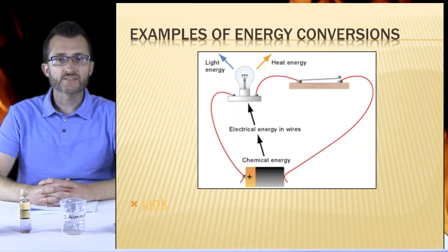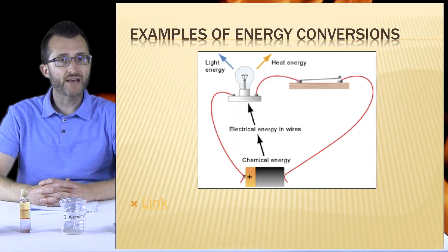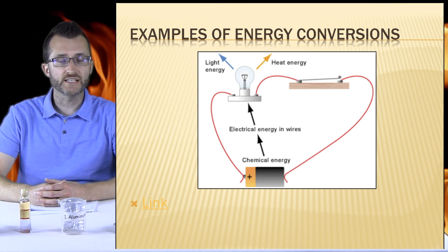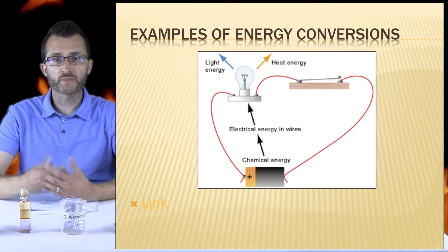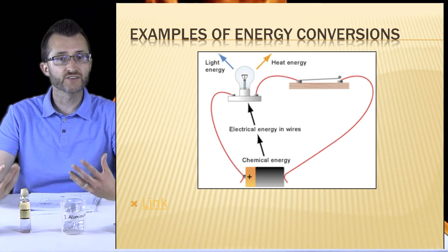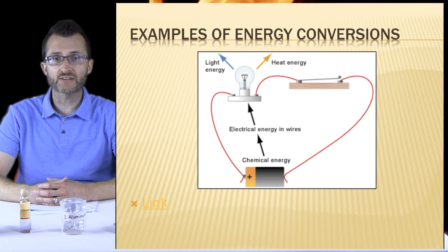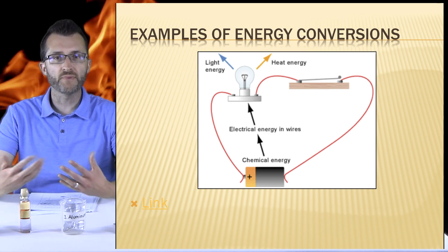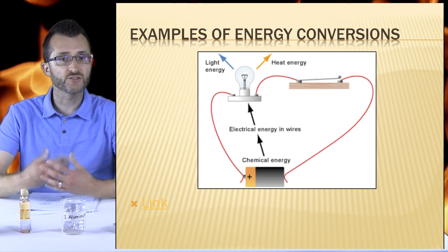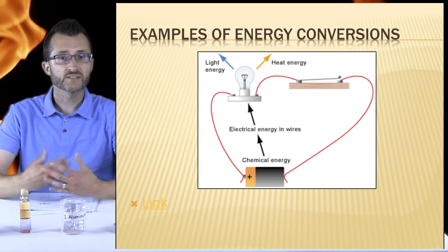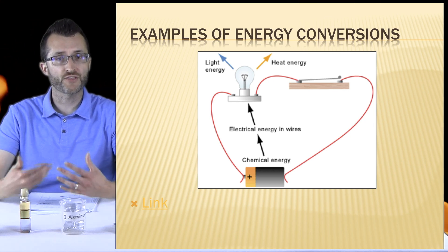Now we're going to apply the law of conservation of energy by showing how energy can be converted into different types. Take a look at this circuit here. We have a battery where potential chemical energy is stored. And then it gets converted into kinetic electrical as charge runs through the wire. It then goes to the light bulb where energy is converted into kinetic light or radiant energy. Also, some energy is lost as heat or thermal energy.